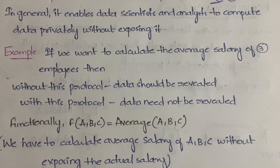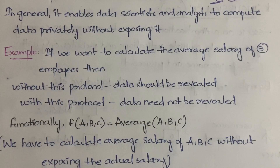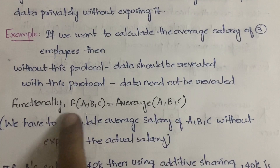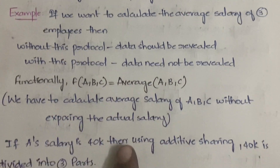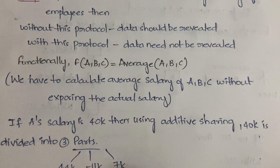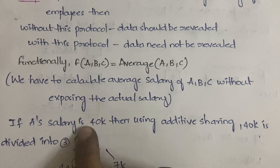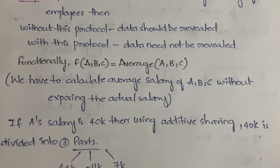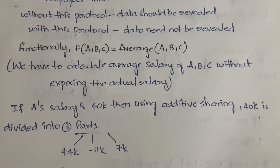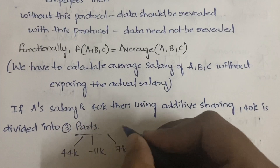Without this protocol, the data would need to be revealed to others. But with secure multi-party computation, you don't need to reveal your data. Functionally, you can express it as f(A, B, C) = average of A, B, C. So, suppose A's salary is 40,000 rupees per month. Using the additive sharing property, 40,000 is divided into three randomly generated parts — for example: 44, -11, and 7.